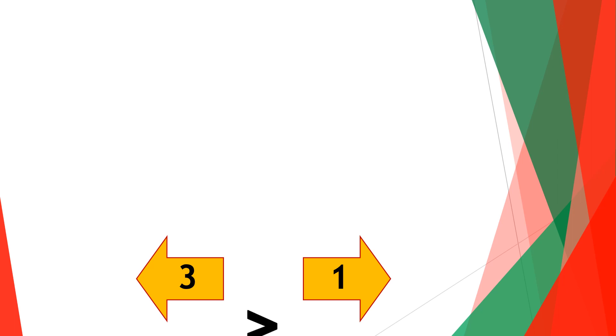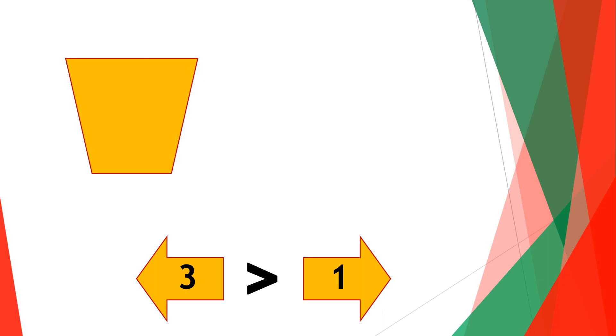Let's move on to our next question: three is greater than or less than one? Three is greater than one. If you use another example and put three avocados on one side and one avocado on the other side.